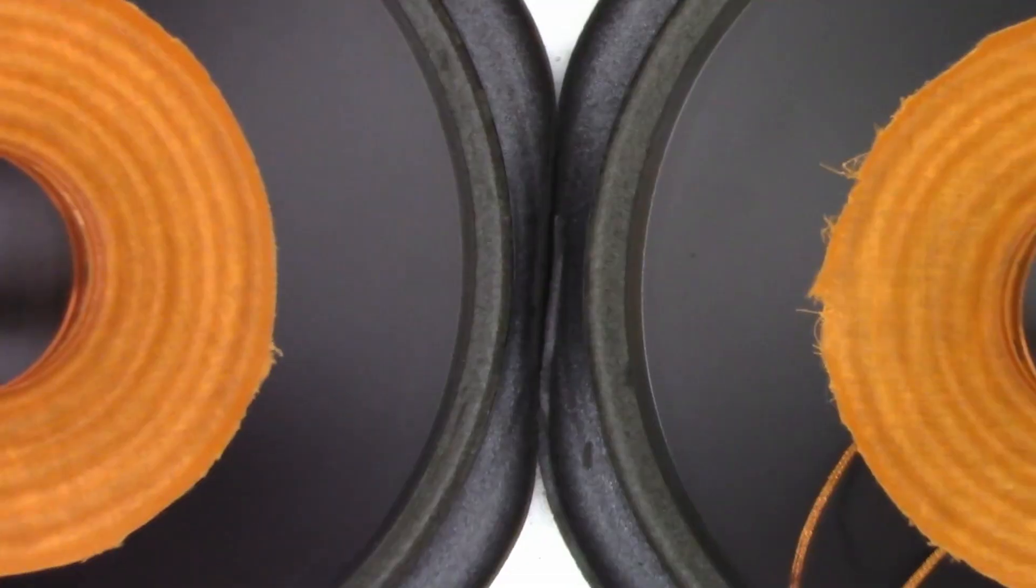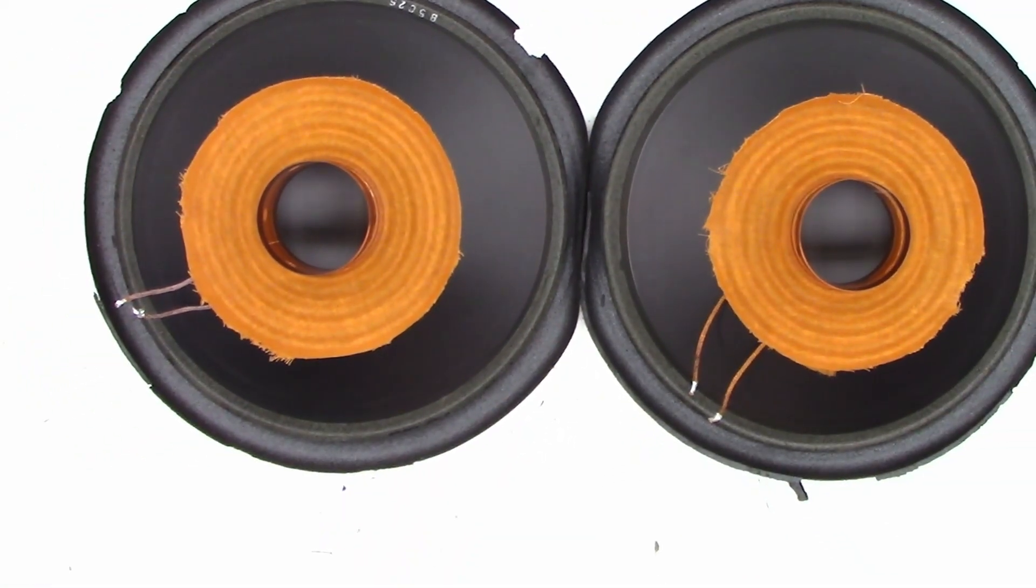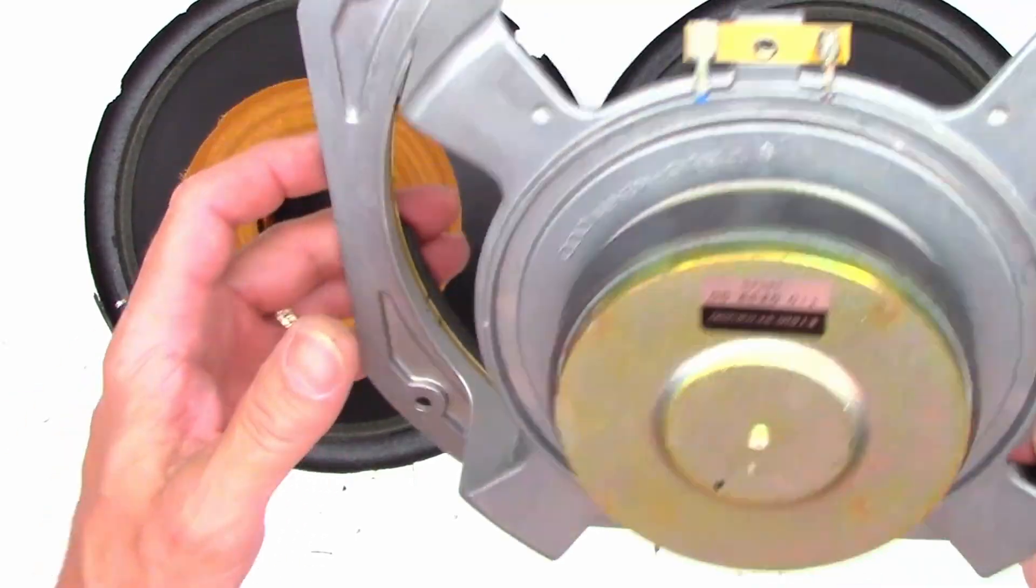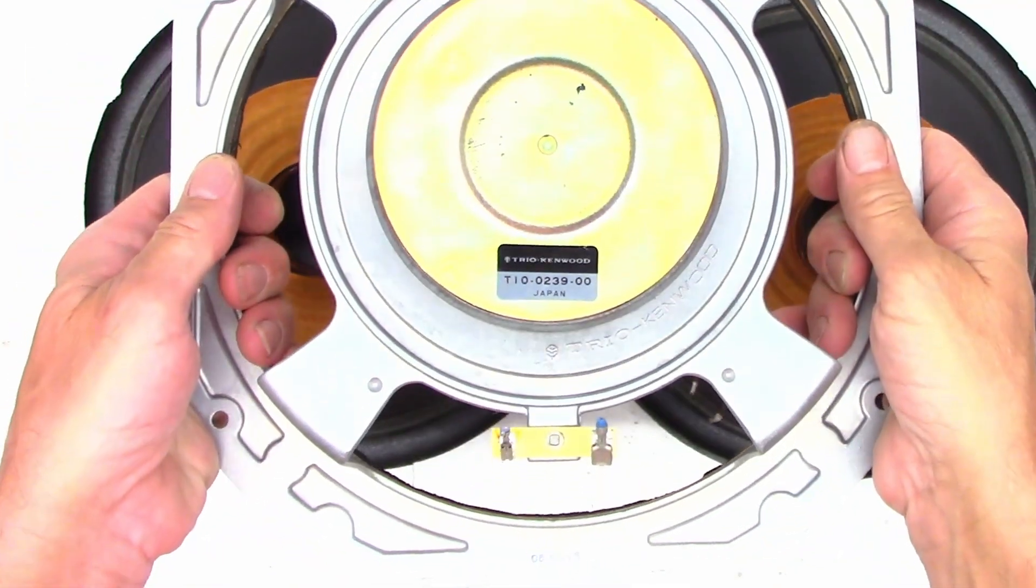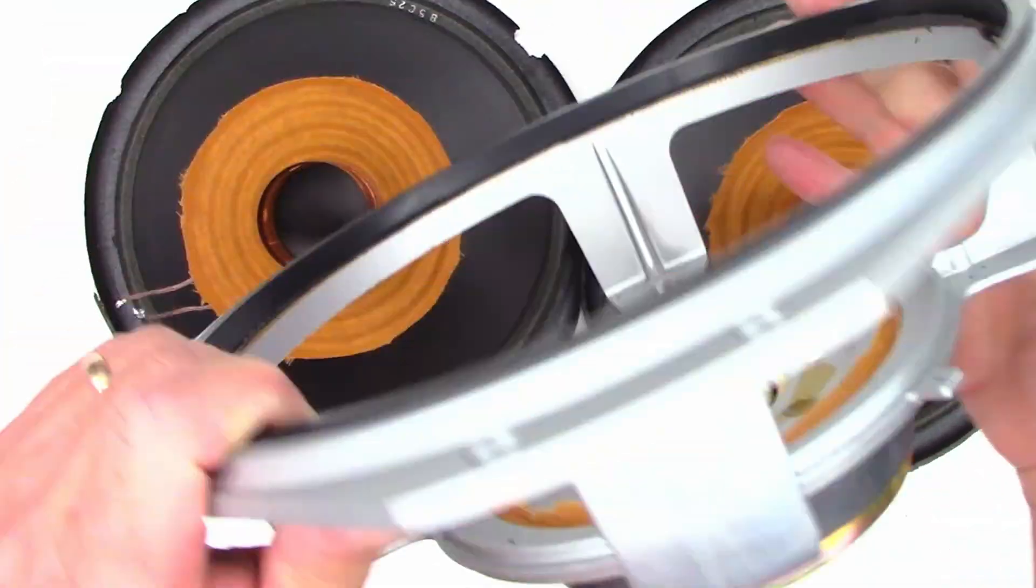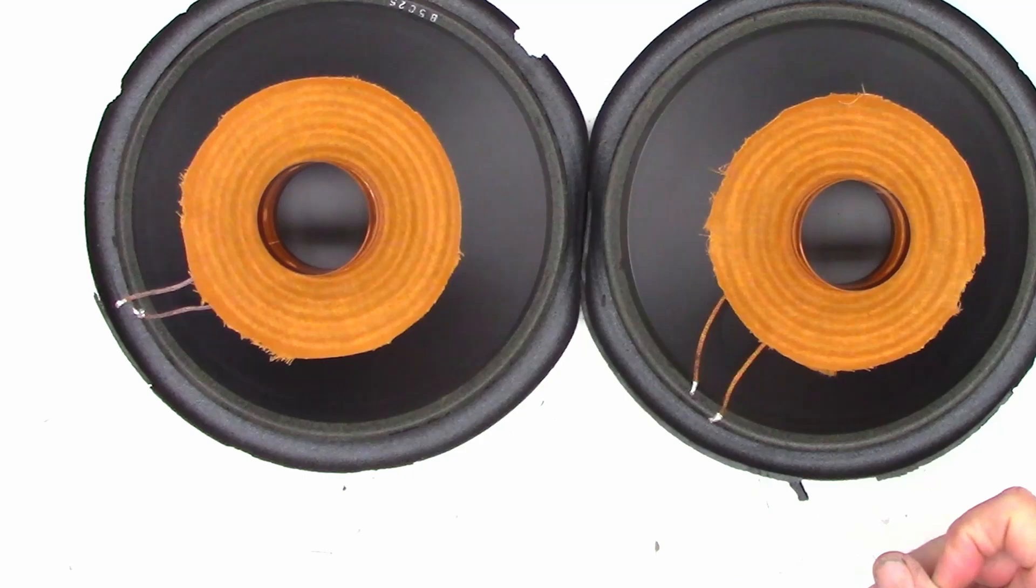Anyhow, we have closure, finally. All right, everyone, thanks for watching. This quick little video, which is going to be probably about 10 minutes long, maybe. On the disassembly of the Kenwood, get the model number here. The T10-0239-00. Speakers out of the LSP-9000D tower speakers from 1985. I certainly hope you enjoyed the video.